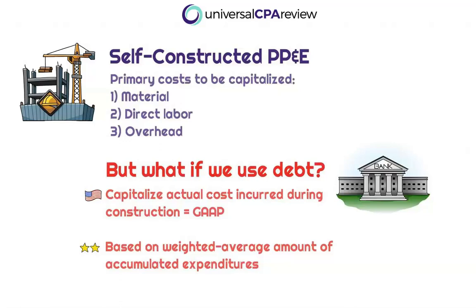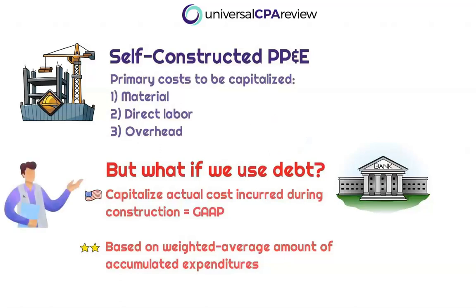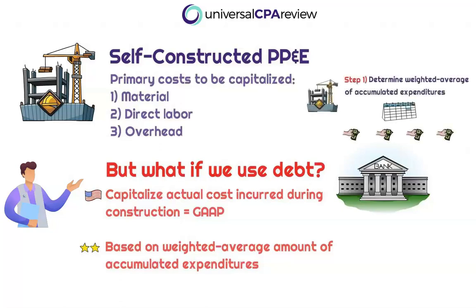There are a lot of details we need to understand, but we're going to start from the beginning. When it comes to self-constructed PP&E, we're going to have three primary costs: direct materials, direct labor, and overhead cost — pretty straightforward cost accounting. But what if debt is being used? That is the ultimate question the FAR exam wants you to be able to digest. US GAAP wants us to capitalize actual cost incurred during this construction, and we're going to do this by applying this to a weighted average amount of accumulated expenditures — the total accumulated expenditures that have to do with this construction project.